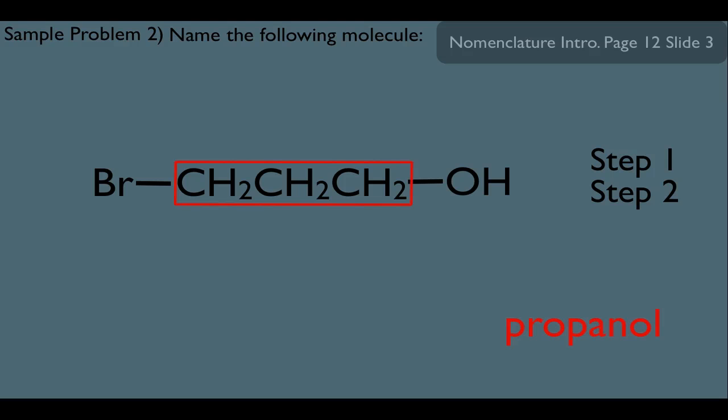But if you number it from right to left, then you also have a substituent technically on carbon-1 and a substituent on carbon-3. So the question here is, which is it? Or does it even matter?